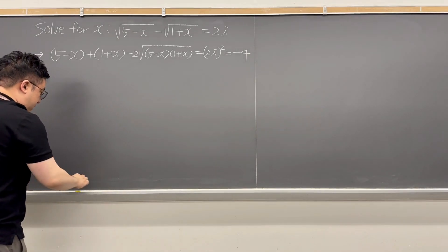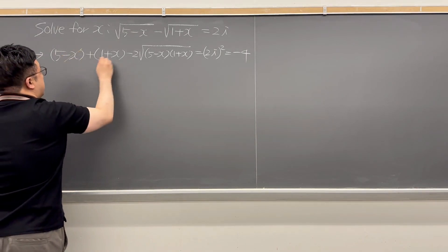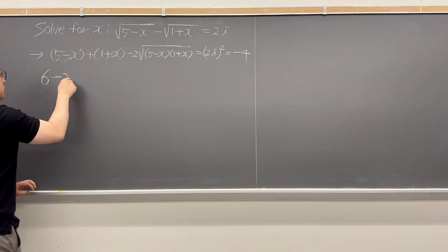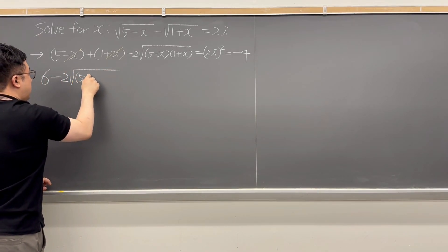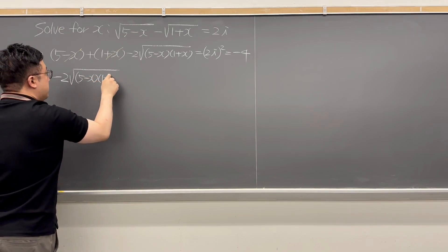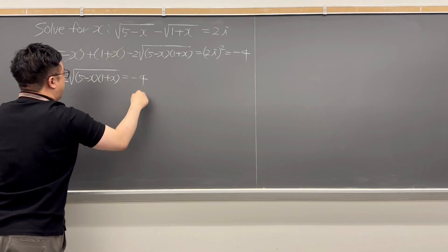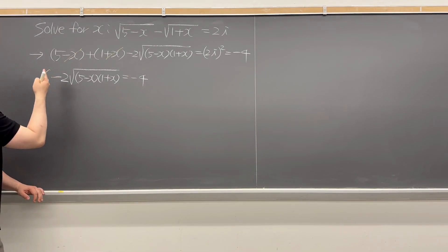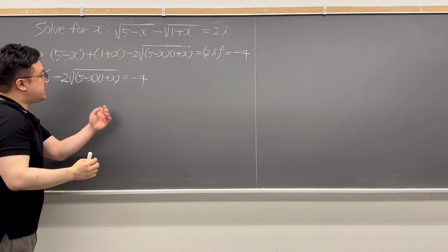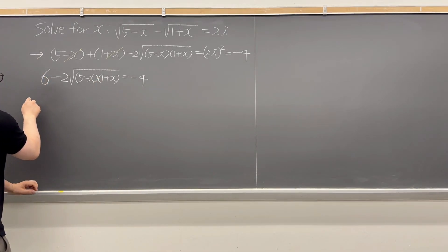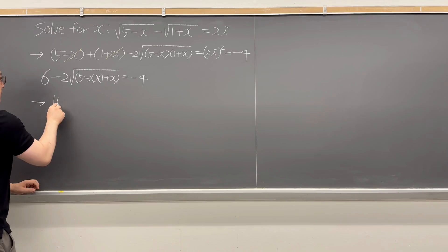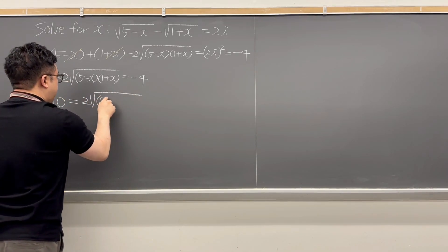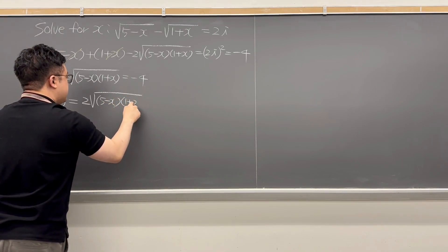Let's rewrite the left and right-hand side, because we can cancel the two x's out. So we have 6 minus 2 times the square root of (5 minus x)(1 plus x), and this is equal to negative 4. We can move negative 4 to the left-hand side and the radical term to the right, giving us 10 equals 2 times the square root of (5 minus x)(1 plus x).